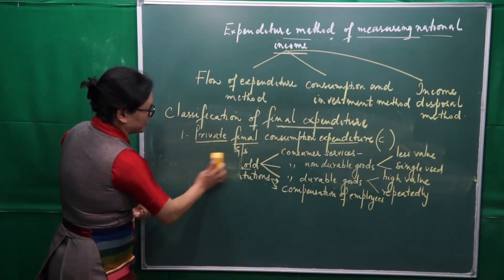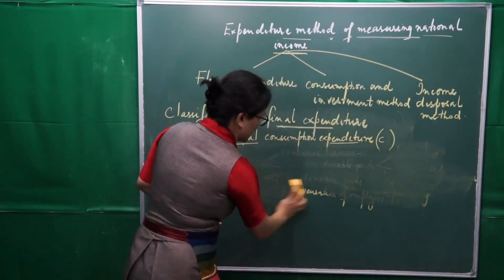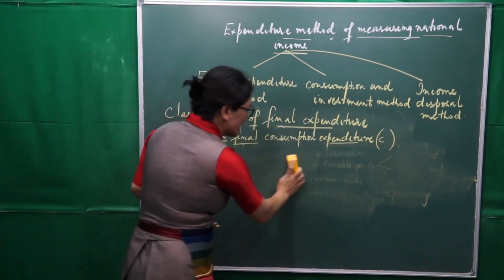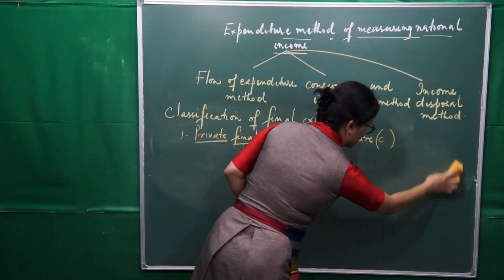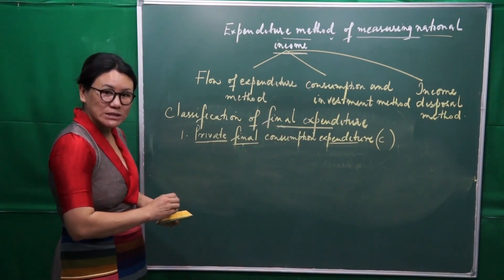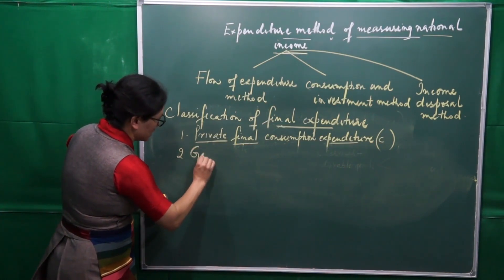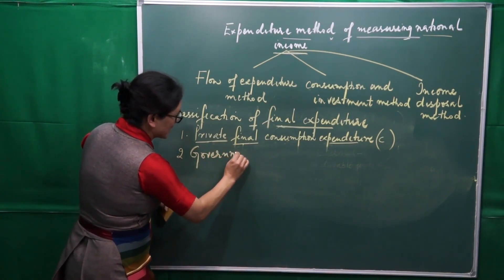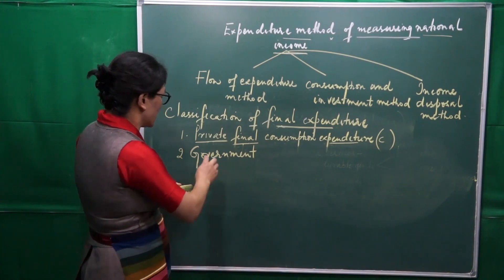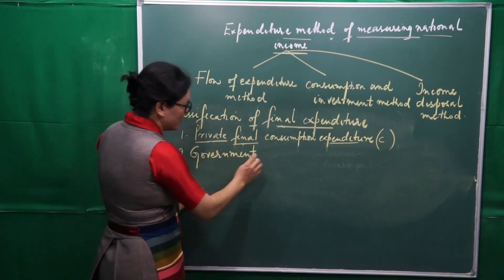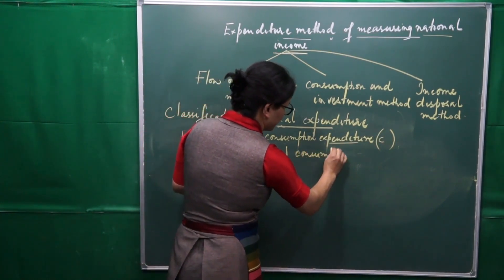Not only consumers and non-profit private institutions are incurring expenditure — apart from them, we also have the government sector which incurs expenditure. So the second classification is Government Final Consumption Expenditure.